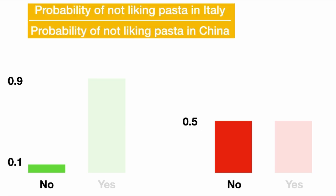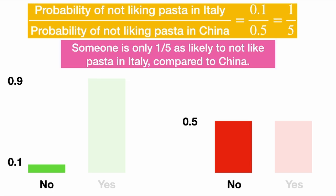The ratio of the probability of not liking pasta in Italy over the probability of not liking pasta in China is 0.1 over 0.5, or 1 over 5, which is 0.2. Someone is only one-fifth as likely to not like pasta in Italy compared to China. This is a likelihood ratio — it's a ratio of two likelihoods.